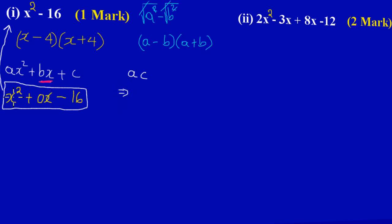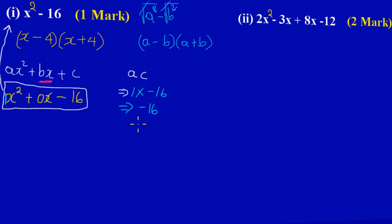The AC method says that a is the coefficient of x squared. The coefficient of x squared here is one — when you don't see a number there you have an invisible one. So a is 1, and I'm multiplying that by negative 16. The product of AC is 1 times negative 16, which gives negative 16. So I need factors of negative 16 that when added give zero — the missing middle term.